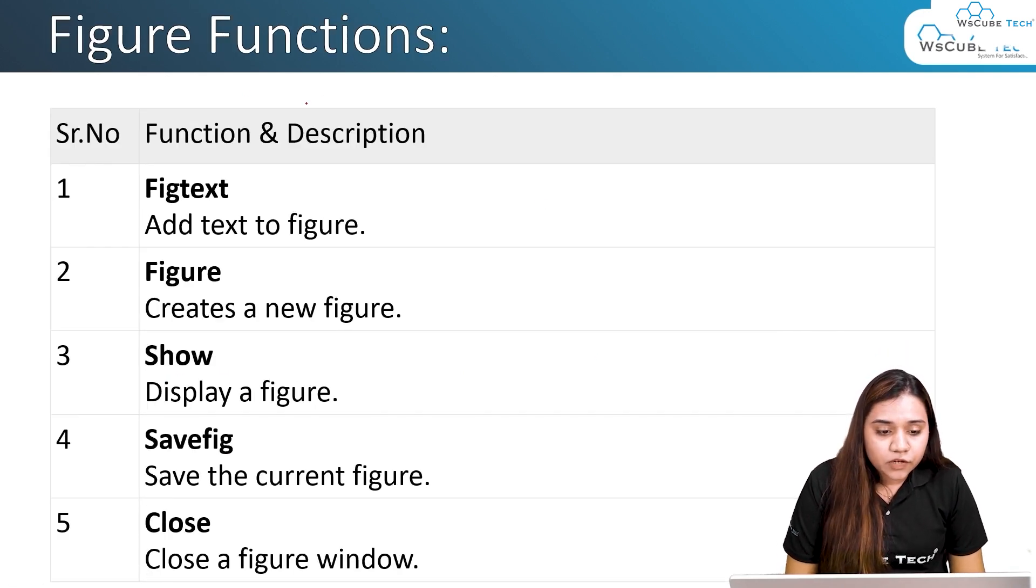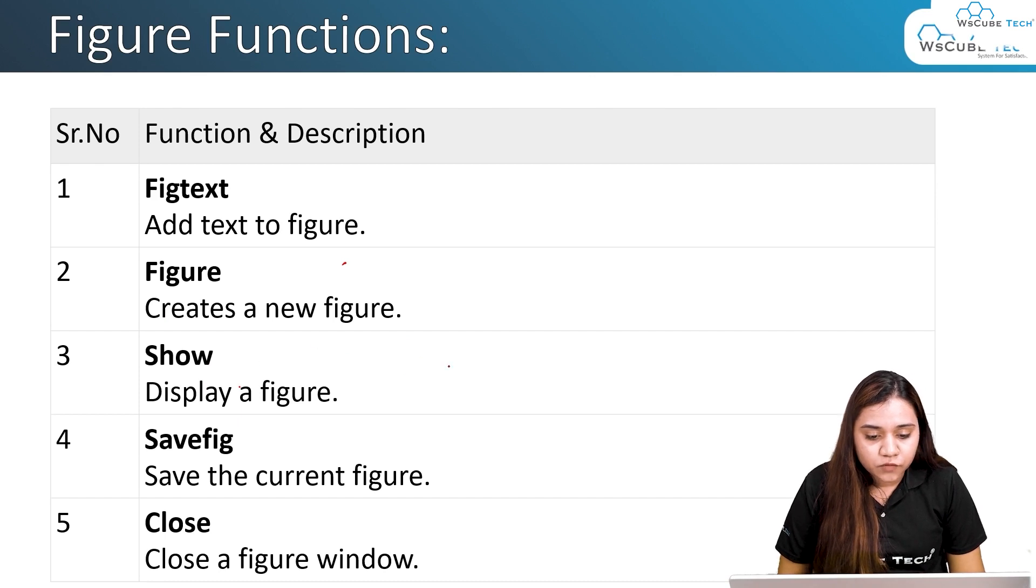Moving ahead, talking about the figure functions. For example, figuretext will add text to your figure. Figure itself will create a figure with whatever dimensions you give it. Then we have show function. The show function will display the figure. All you need to do is write show function.